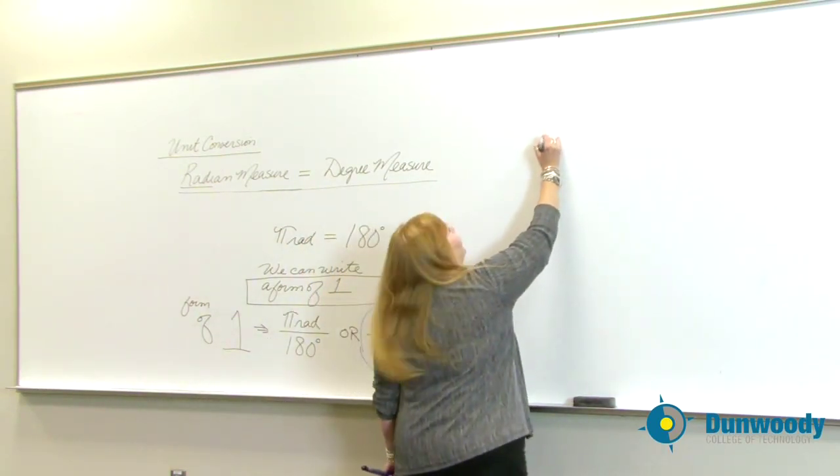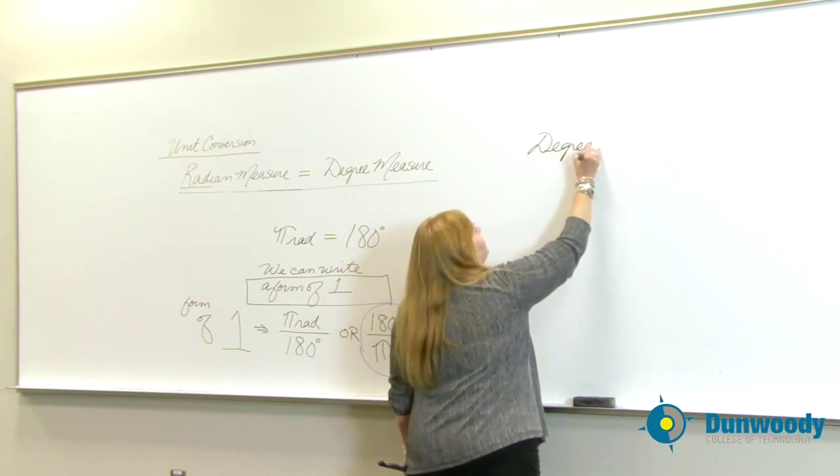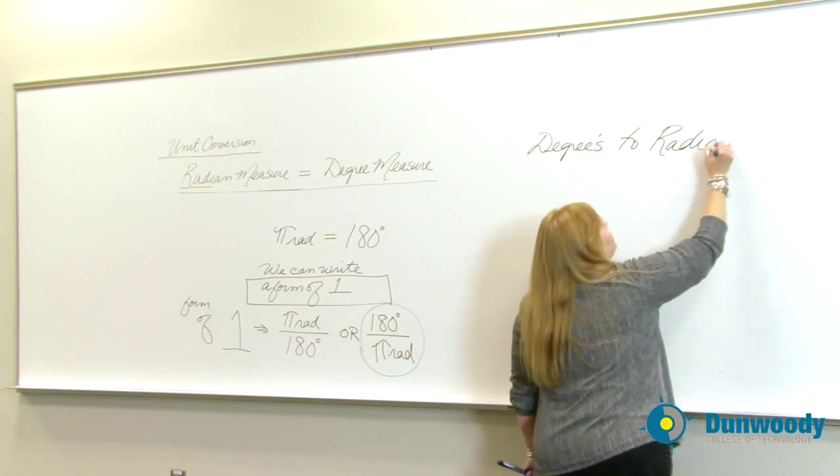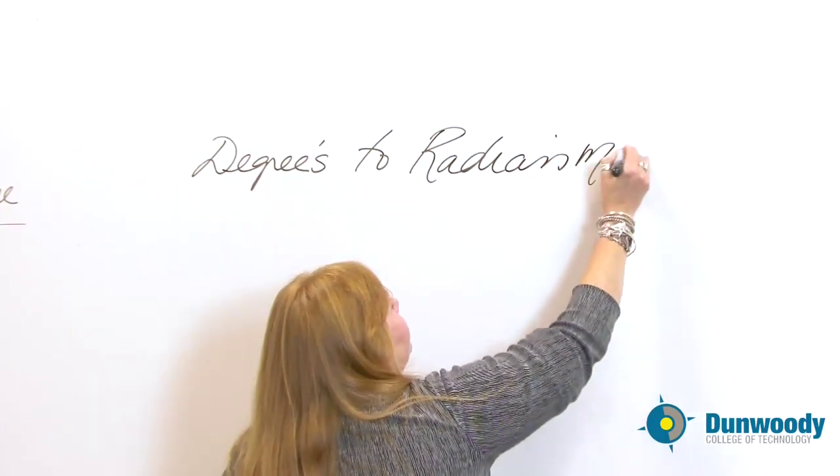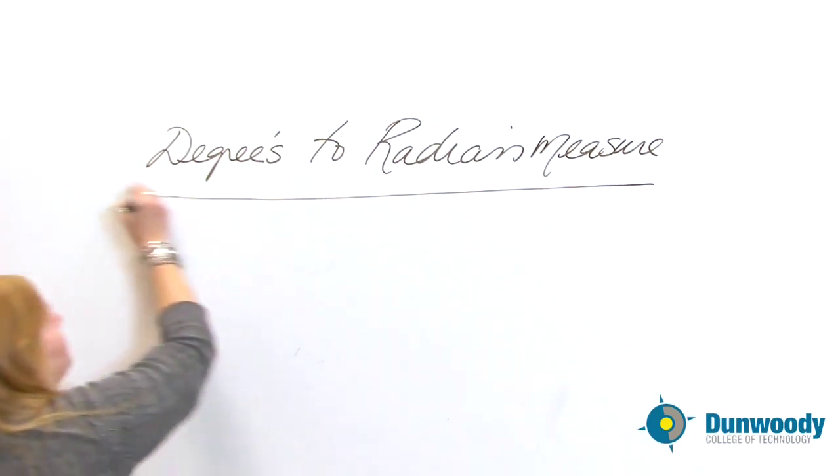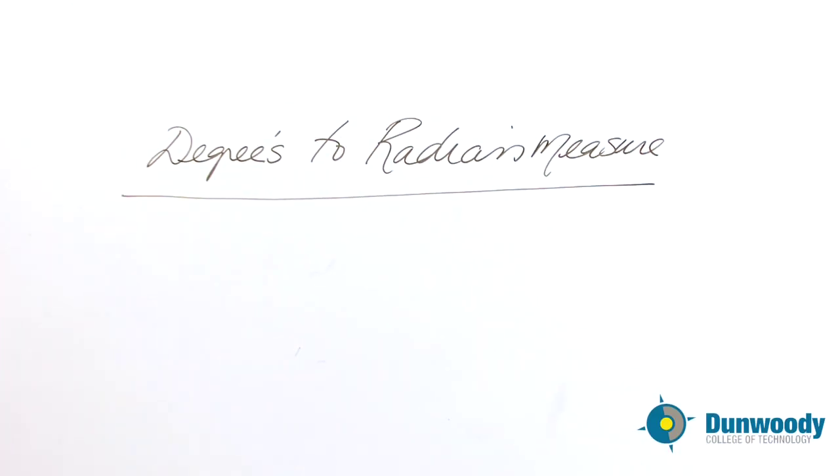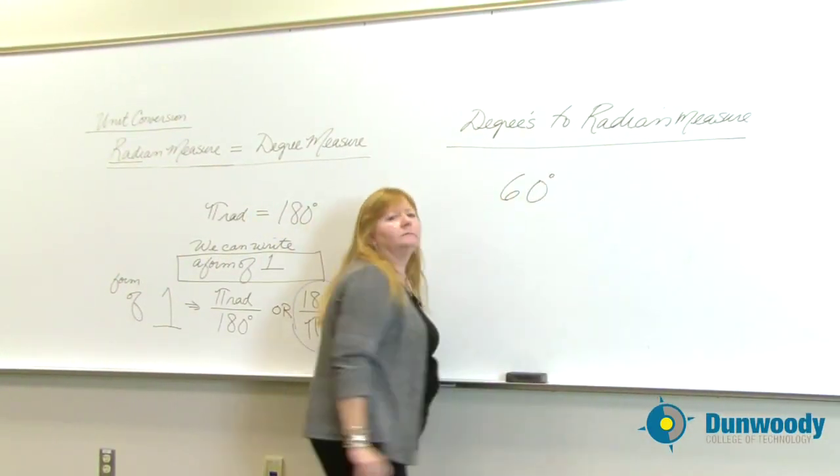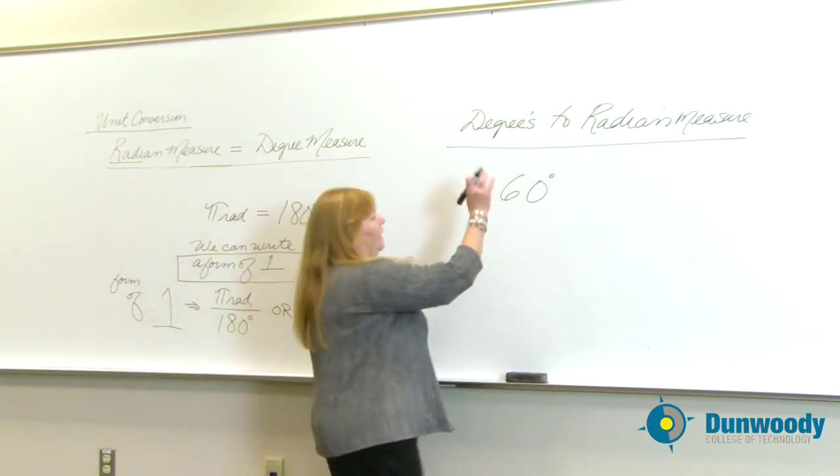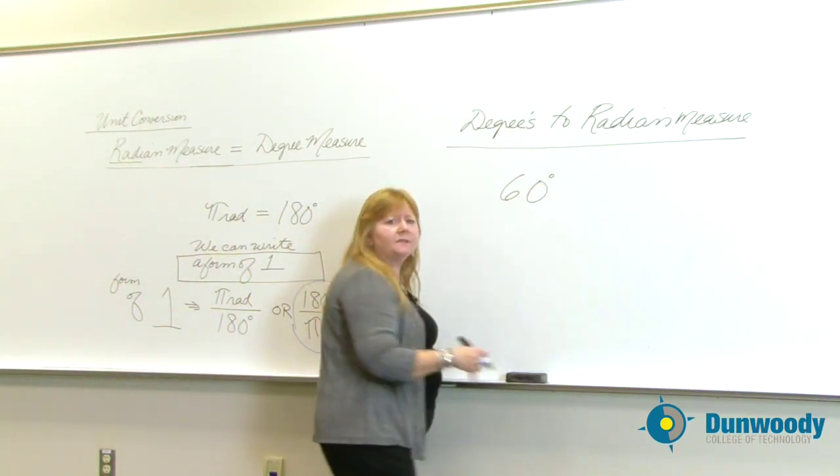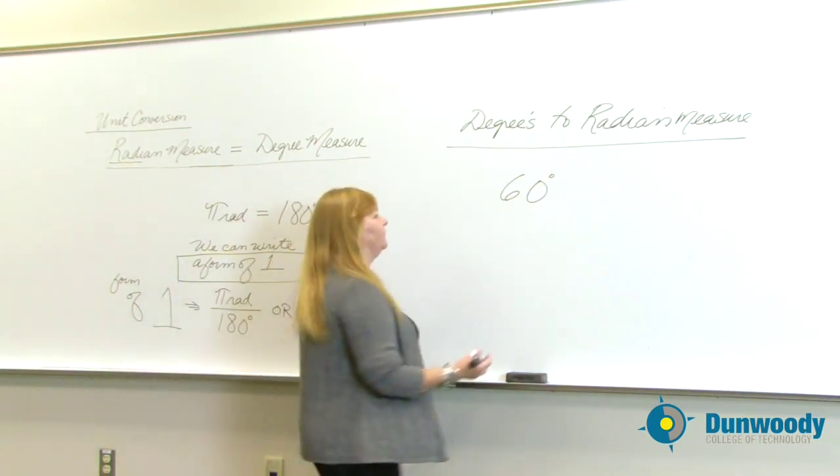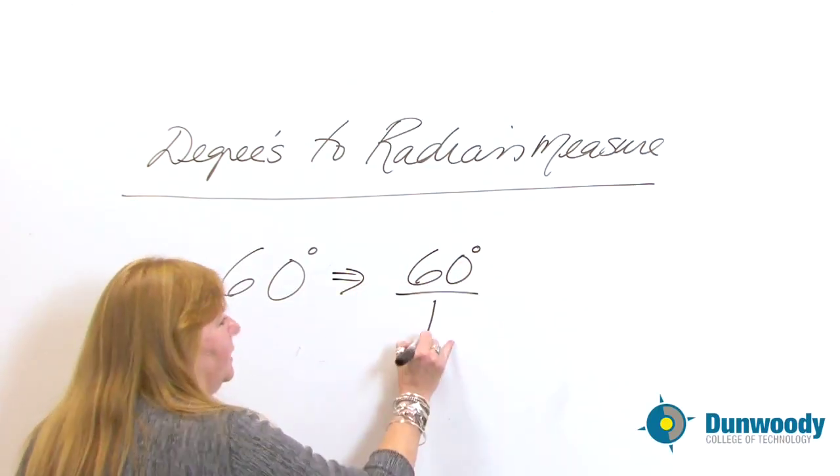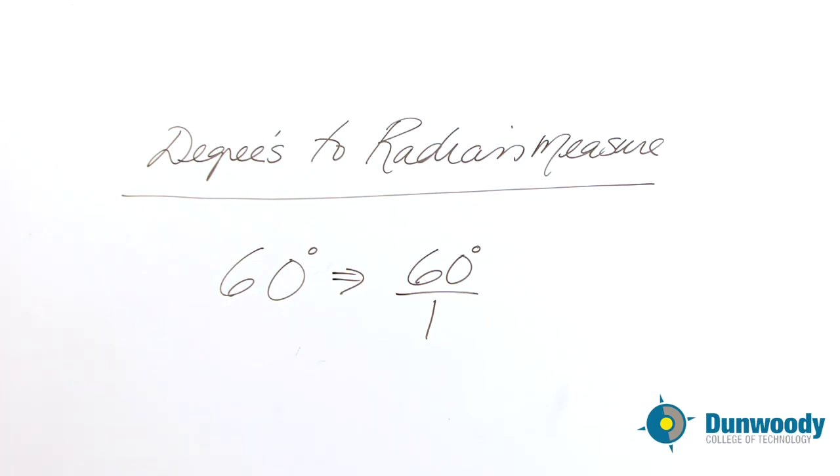So here we go. Let's go ahead and go from degree measure, degrees to radian measure. So I'm just walking it back the other way. Two different ways to say the same thing. Let's start with 60 degrees. All right, so 60 degrees. I don't want to read this as degrees now. I want to see what it looks like in radian measure. You can write 60 degrees as if it's over 1. It means the same thing. I'm getting myself prepared.